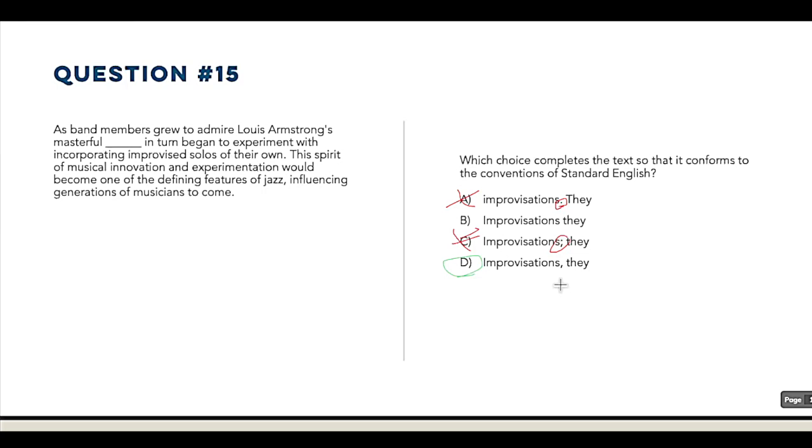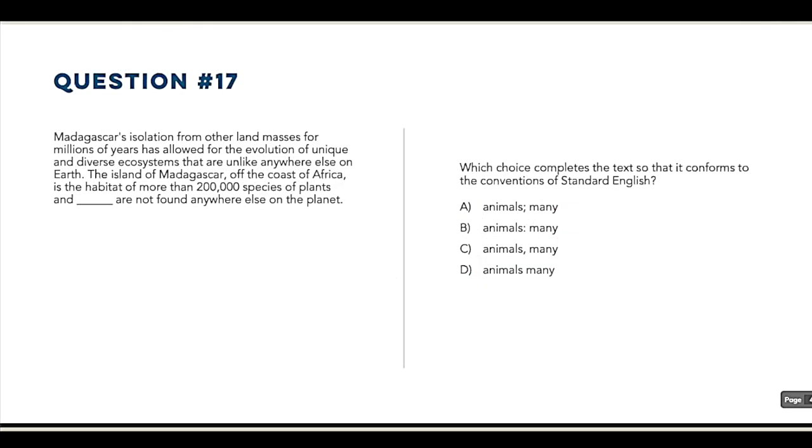Basically, everything before the word they is a big old introductory phrase, and we know this because they is the subject of the sentence, and anytime you have a subject coming after a comma way later than the beginning of the sentence, most of the time that's going to be an introductory phrase. And then, of course, if we need a period like we do on this question, and you see that a period's not available but a semicolon is, you're going to know that that's your answer.